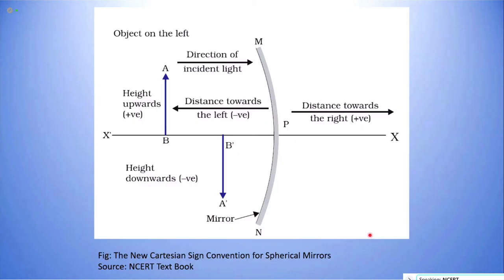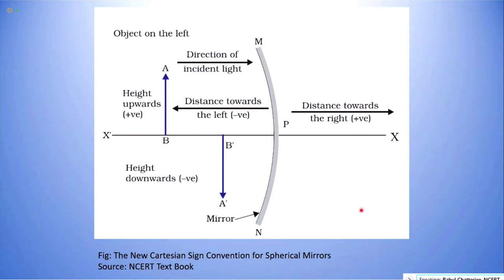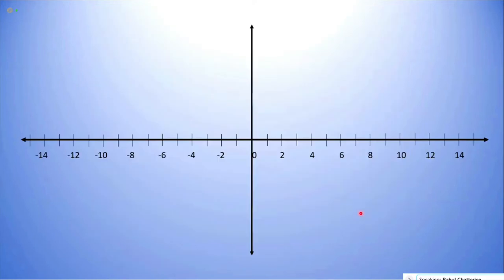Distances measured perpendicular to and above the principal axis are taken as positive, and those perpendicular to and below the principal axis are taken as negative. To summarize in a quick diagram — taken directly from your textbook — P is the pole. All distances to the left of the pole are negative, all distances to the right are positive. All heights above the principal axis are positive and all heights below are negative.